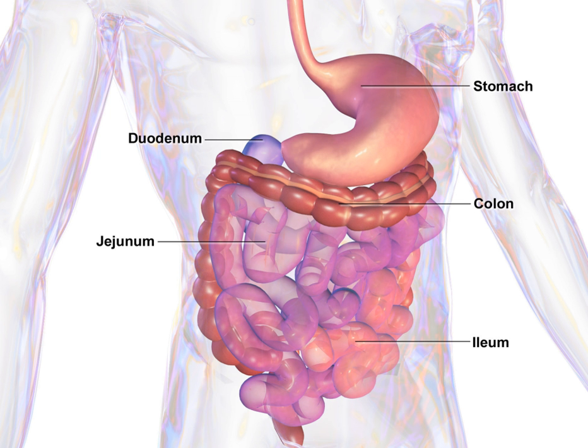Gastrointestinal is an adjective meaning of or pertaining to the stomach and intestines. A tract is a collection of related anatomic structures or a series of connected body organs. All bilaterians have a gastrointestinal tract, also called a gut or an alimentary canal. This is a tube that transfers food to the organs of digestion.